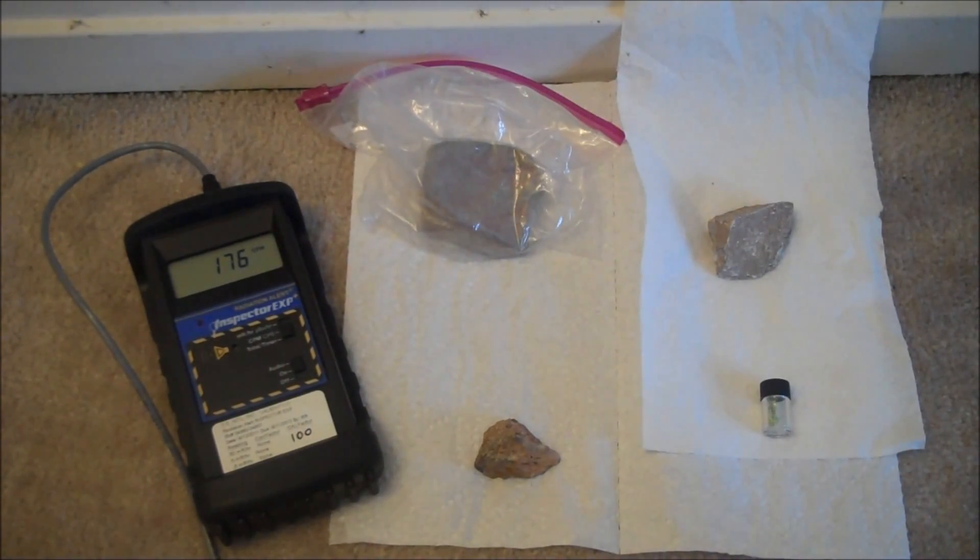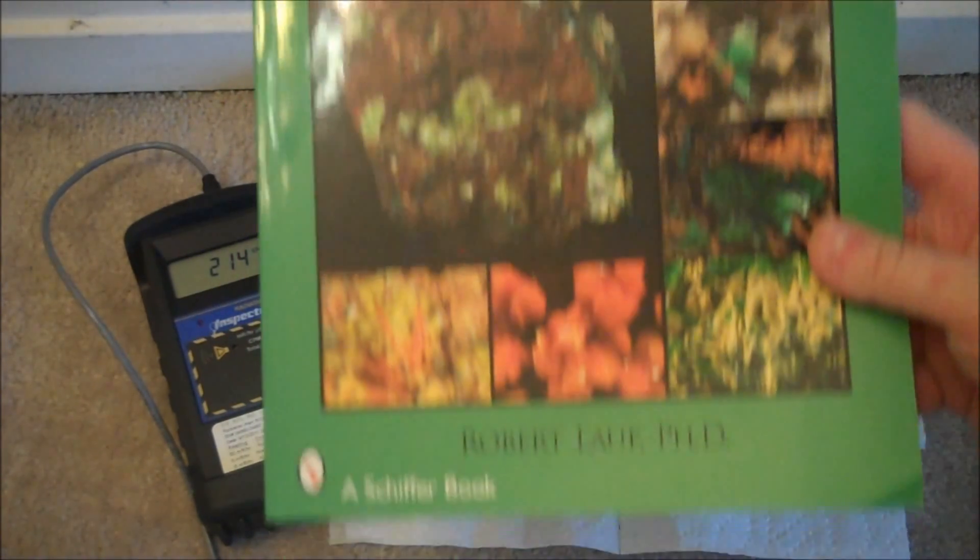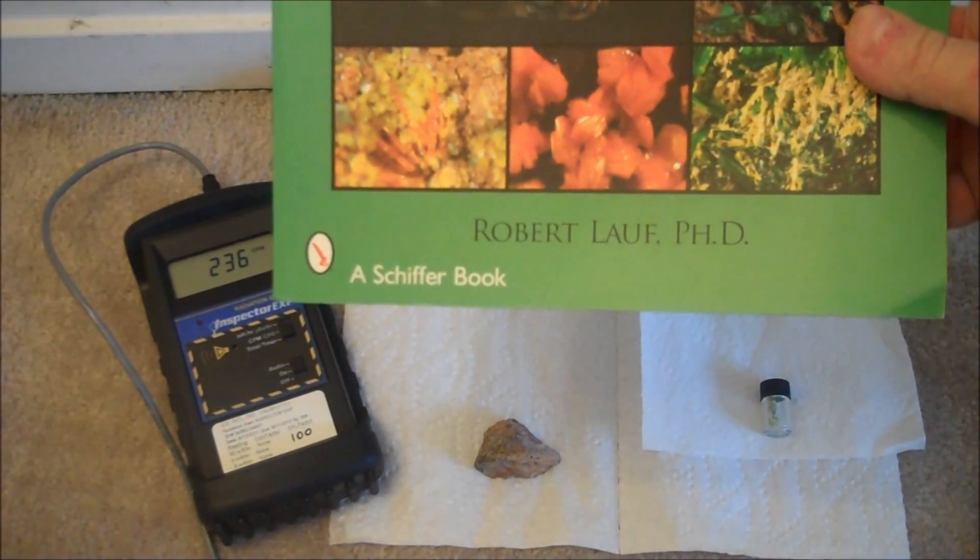Natural uranium comes in many different types and many different shapes. To understand more about natural radiation, it's important to buy yourself a decent book, like this guy right here, The Introduction to Radioactive Minerals by Robert Loeff, Ph.D.